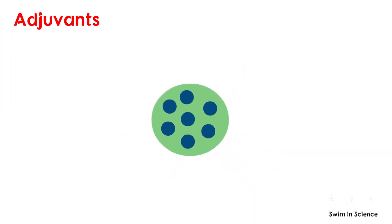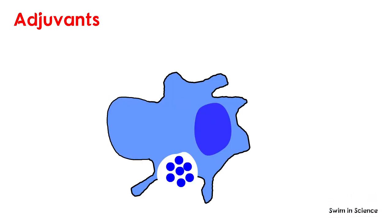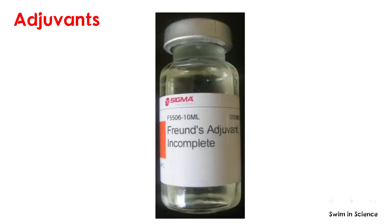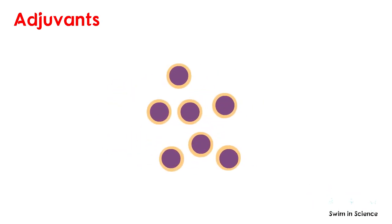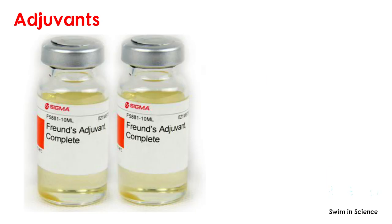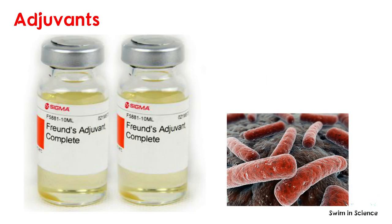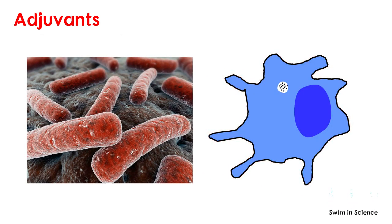The alum precipitate also increases the size of the antigen, thus increasing the likelihood of phagocytosis. Another example is a water and oil adjuvant such as Freund's incomplete adjuvant, which disperses the oil into small droplets surrounding the antigen, resulting in the antigen being very slowly released from the site of injection. Freund's complete adjuvant contains heat-killed mycobacteria as an additional ingredient. The mycobacterial cell wall component activates macrophages, leading to increased antigen presentation potential.